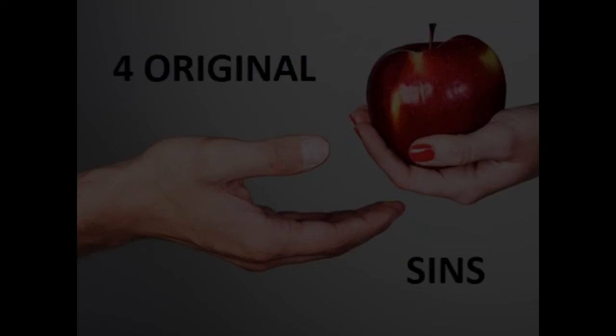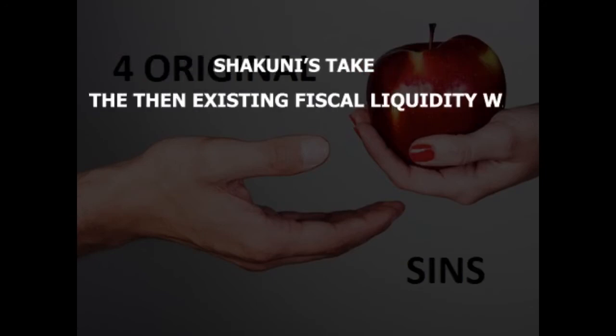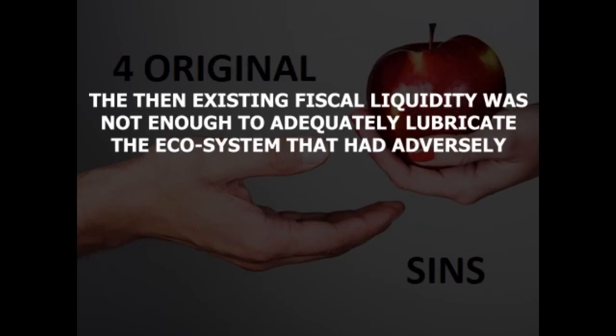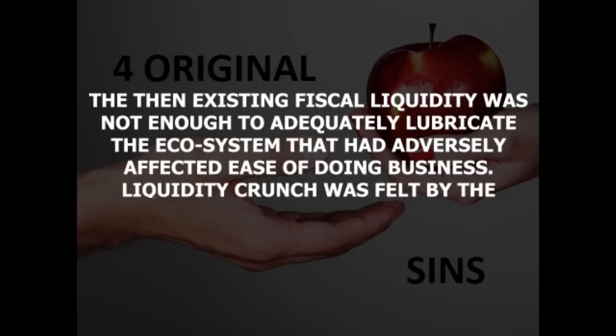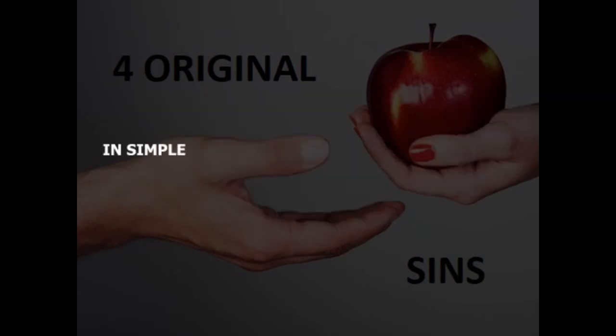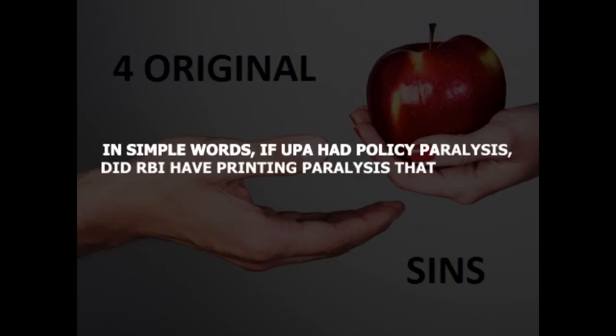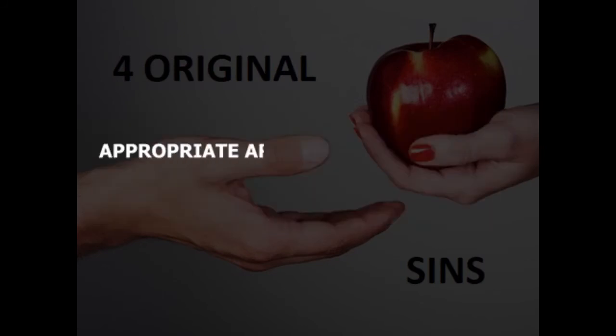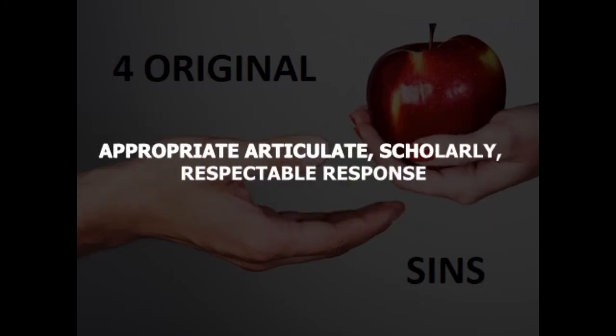Why this new baby under FinMin? Shakuni says the then existing fiscal liquidity was not enough to adequately lubricate the ecosystem that had adversely affected ease of doing business. In simple words, if UPA had policy paralysis, did RBI have printing paralysis that affected ease of doing business? Hence the baby. For appropriate, articulate, scholarly, respectable response, the then Honourable Finance Minister will have to be asked.